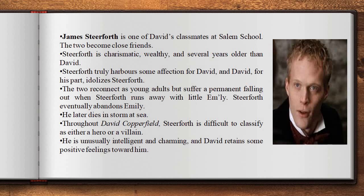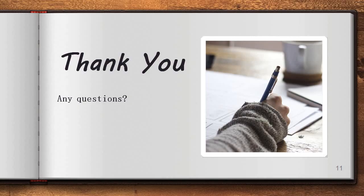James Steerforth is one of David's classmates at Salem House. The two become close friends. Steerforth is charismatic, wealthy, and several years older than David. Steerforth truly harbors some affection for David, and David for his part idolizes Steerforth. The two reconnect as young adults but suffer a permanent fallout when Steerforth runs away with little Emily. Steerforth eventually abandons Emily and later dies in a storm at sea. Throughout David Copperfield, Steerforth is difficult to classify as either a hero or a villain — he is unusually intelligent and charming, and David retains some positive feelings towards him. If you have any questions, you can post them in the comment box given below. Thank you.